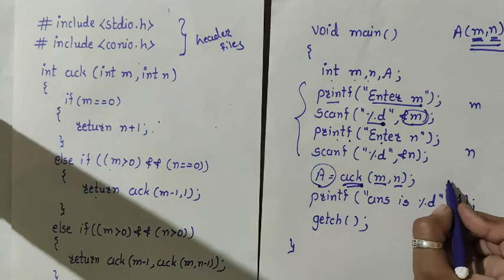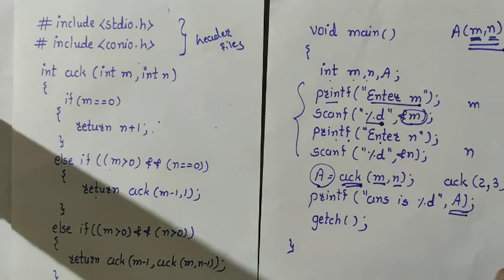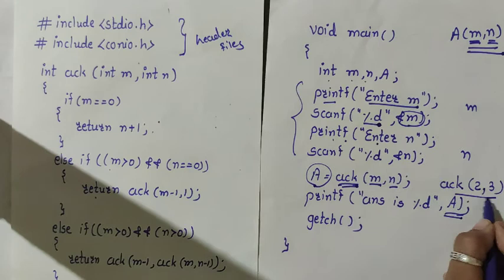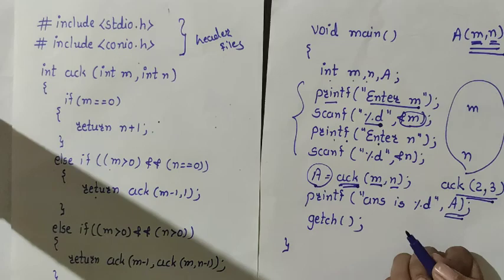Instead of taking values from the user, you can directly provide them, like ACK(2,3). But that is static. Taking input from the user allows dynamic invocation with any value.